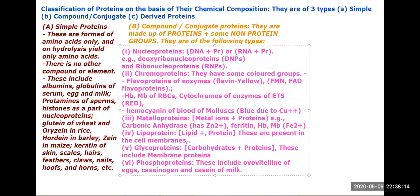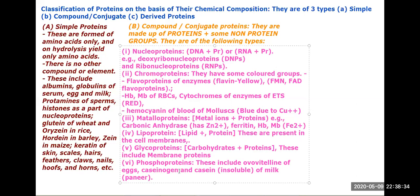Phosphoproteins are found in caseinogen and casein of milk — which in Hindi we call paneer. Casein is insoluble, which is what we eat. Caseinogen is soluble, so it is not visible in milk.